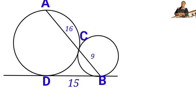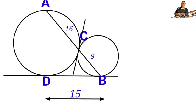We will draw a tangent line to these two circles at point C. The tangent will meet line BD at a point we call E. We will also draw a line from D to C, forming a triangle.